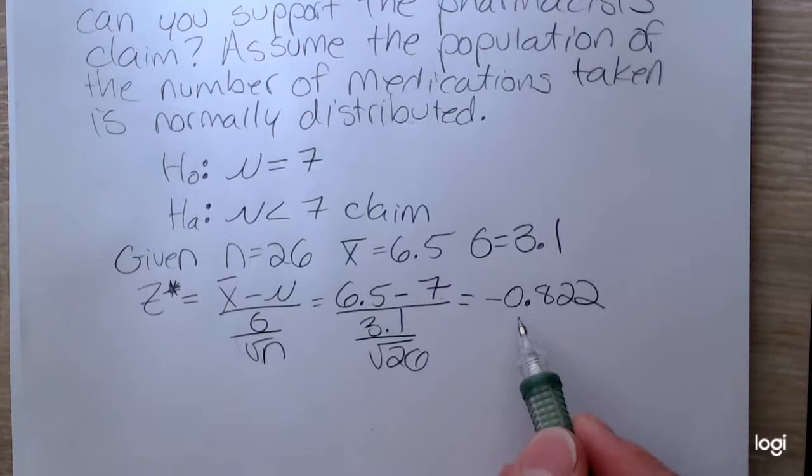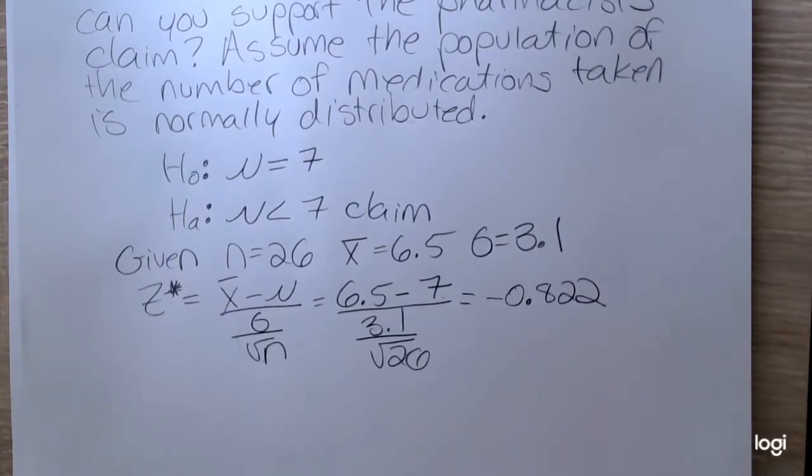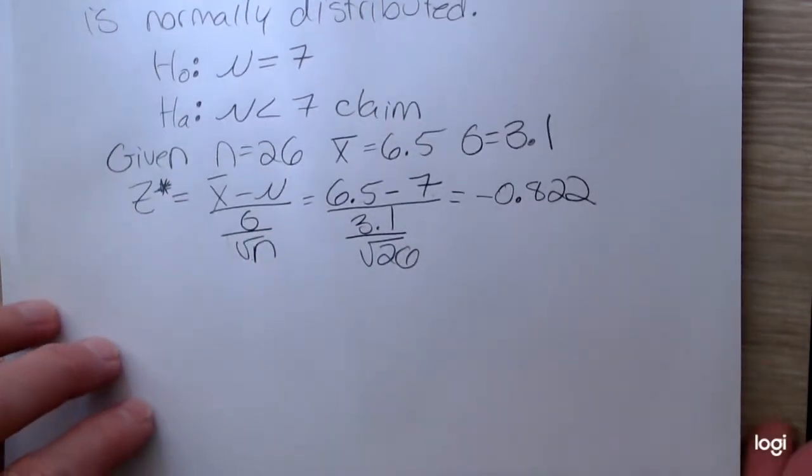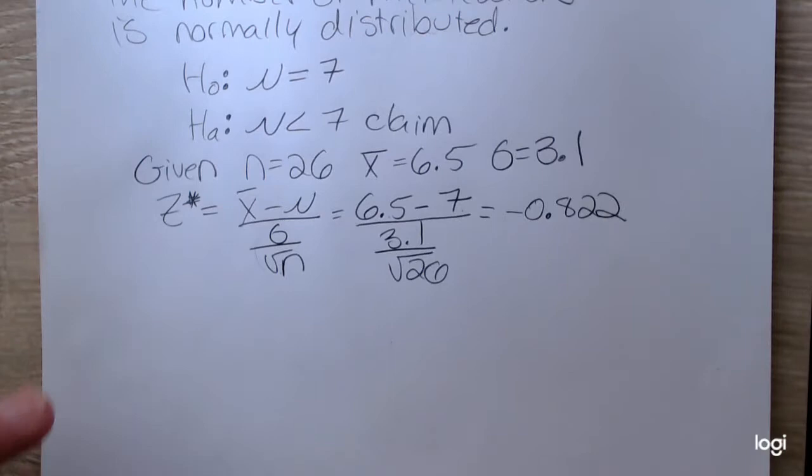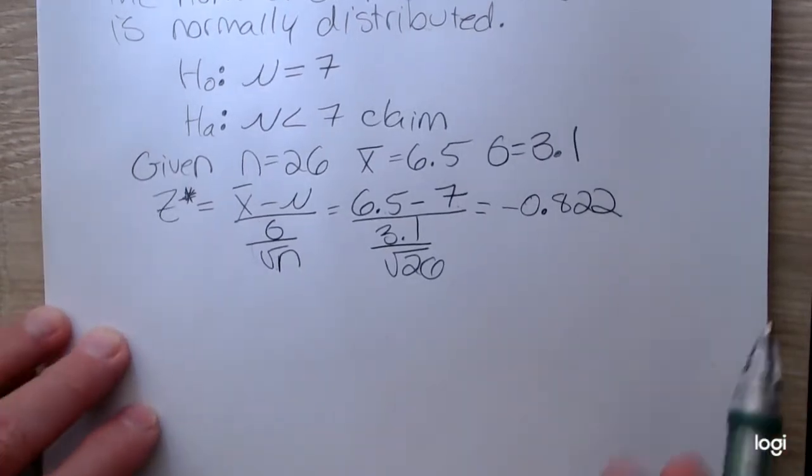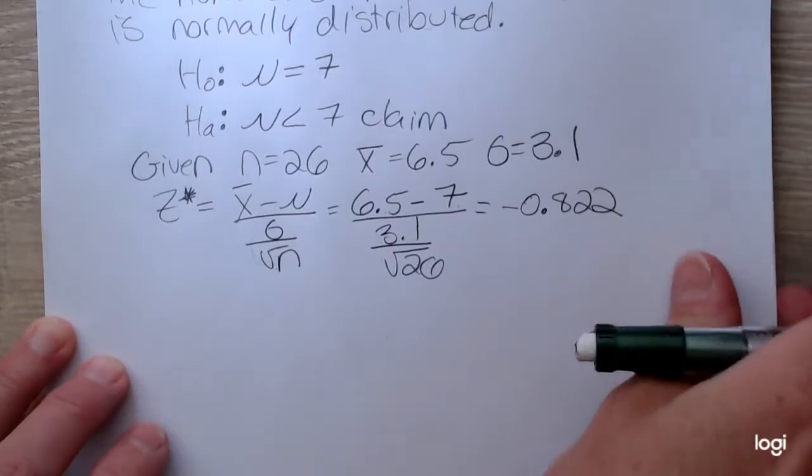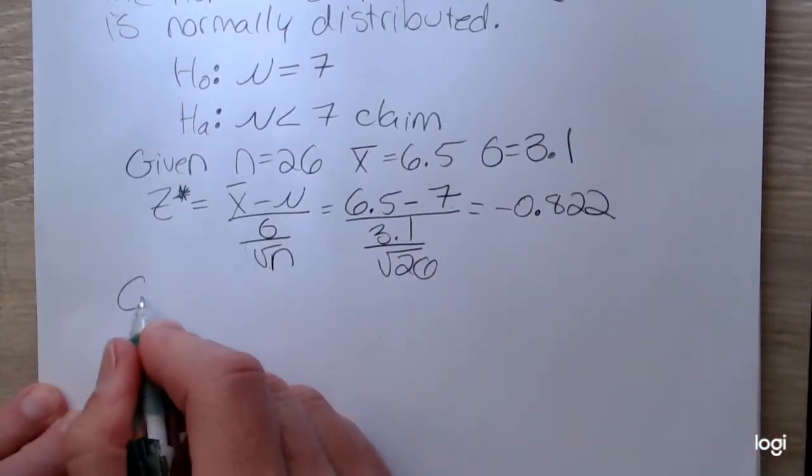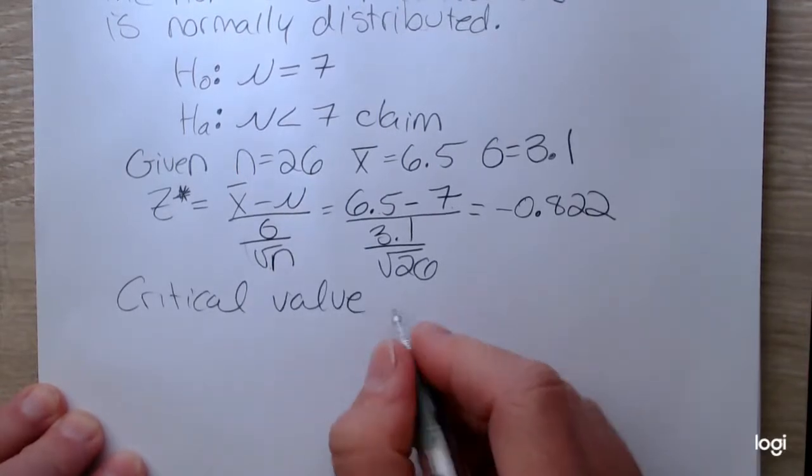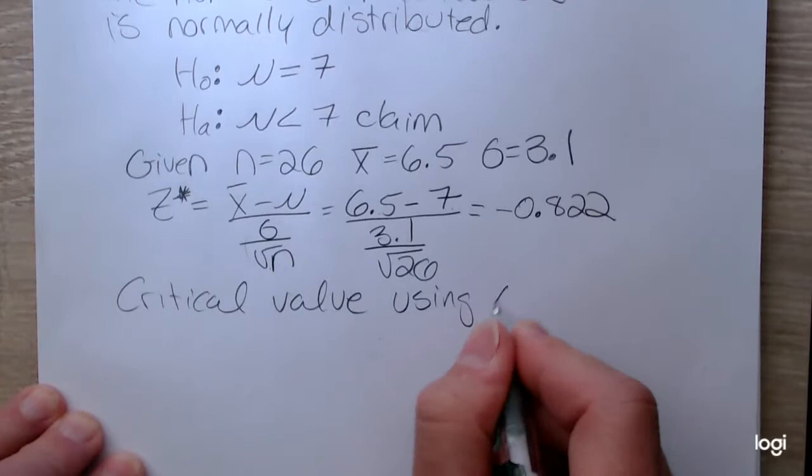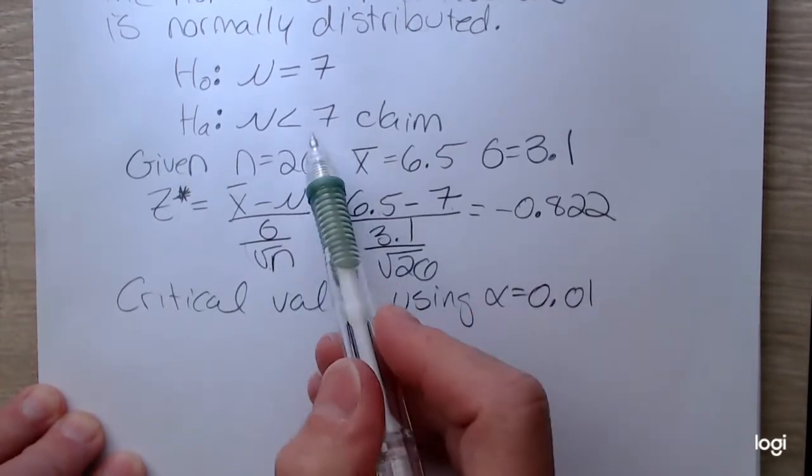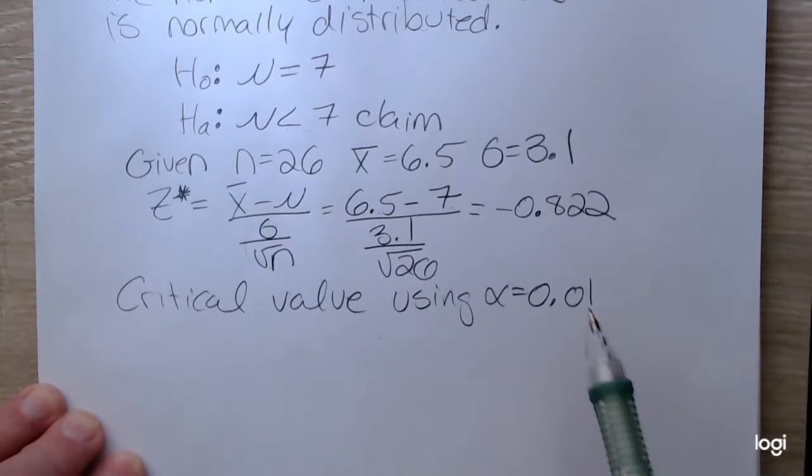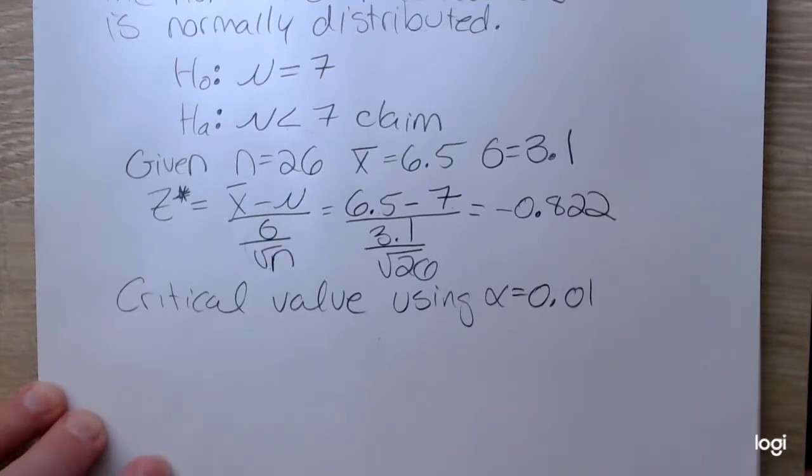This is pretty close to the mean in terms of a standard deviation. So I'm thinking we're going to be failing to reject the null here. But to know for sure, we can find the critical value and also the p-value. The critical value is found by using our level of significance stated in the problem. The level of significance was 0.01. And because this is a single-tailed test, this is a lower-tailed or left-tailed test, I do not need to divide alpha in two. I'll have only one area of rejection, and that will be in that lower tail.